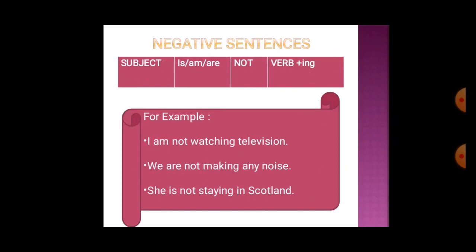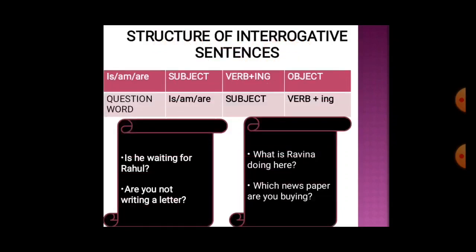For negative sentences in present continuous tense: subject, then 'is', 'am', or 'are', then 'not', then verb plus '-ing'. For example: I am not watching television; we are not making any noise; she is not staying in Scotland. For interrogative sentences, there are two types. The first begins with auxiliary verb 'is', 'am', or 'are', then subject, then present participle, then object.